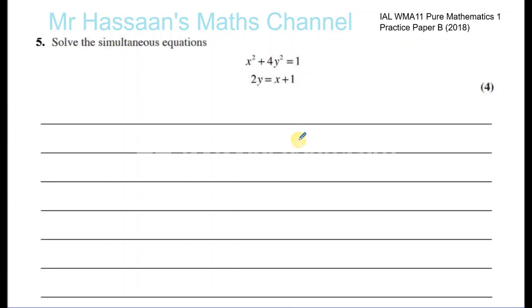Question number 5 from the Pure 1 practice paper B that I compiled. Solve the pair of simultaneous equations: x squared plus 4y squared equals 1 and 2y equals x plus 1. You want to solve this pair of simultaneous equations. So we want to find the value of x and y which make them both true, satisfy both of them.